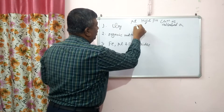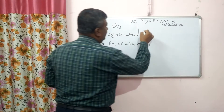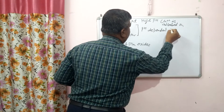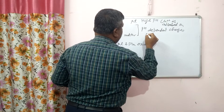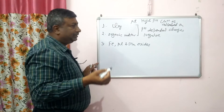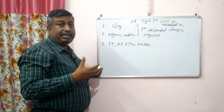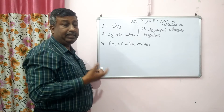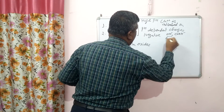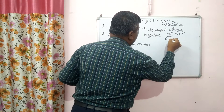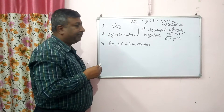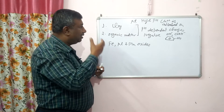On clay and organic matter, there are pH-dependent charges. As pH increases, pH-dependent negative charges increase. So at high pH, there is more negative charge, and because of this negative charge, copper is adsorbed on clay and organic matter. Organic matter carries many negative charges which are pH-dependent — like hydroxyl, carboxylic, and phenolic group ions. As pH increases, phenolic, carboxylic, and hydroxyl groups increase on organic matter and clay.